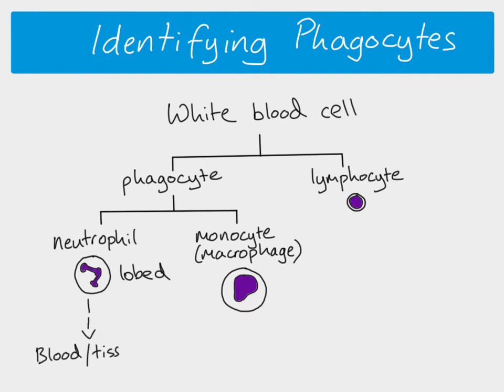Neutrophils are found in the blood and in the tissues and they often move around to different parts of the body. As they go through the blood they might move through the wall of the capillary into the tissue fluid, and the lobed nucleus helps them do that — the shape means the neutrophil is able to squeeze through the pores in the wall of the capillary.